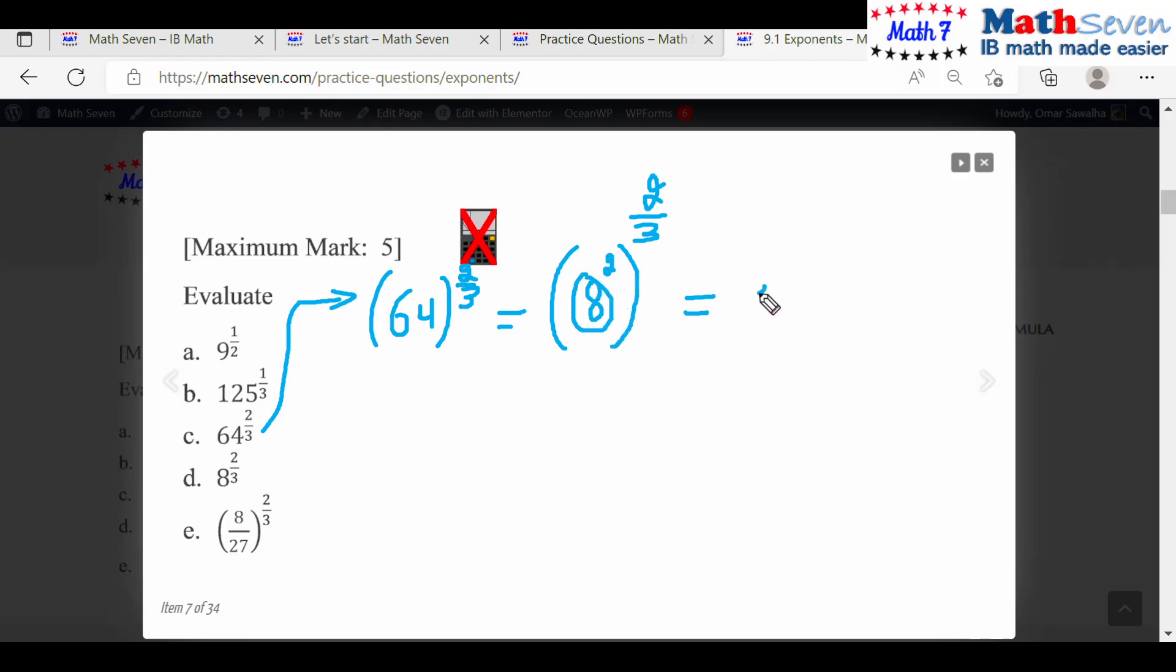Now, can you break the 8 even more? Is it 2 to the power of 3? Yes. So it's 2 to the power of 3 to the power of 2 to the power of 2 over 3. Now, power of a power of a power we multiply. So this will become 2, 3 times 2 times 2 over 3. I write these integers as fractions over 1 over 1.